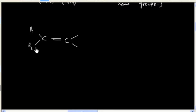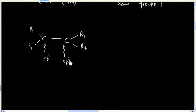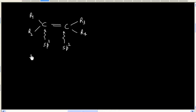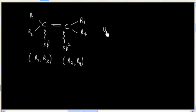Now this is an example of unsymmetrical alkene. In this case, the Sp2 hybridized carbon has different groups. For example, this carbon has R1, R2 groups and this carbon has R3, R4 groups. So this is an example of unsymmetrical alkene.